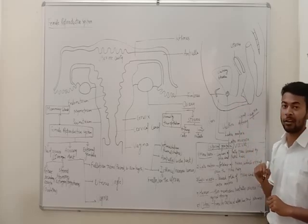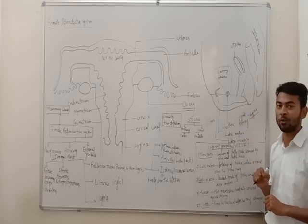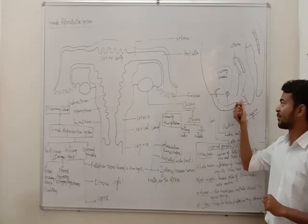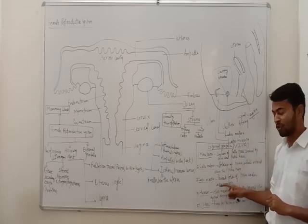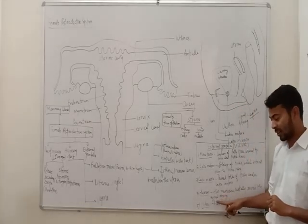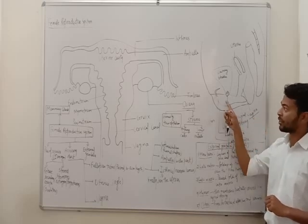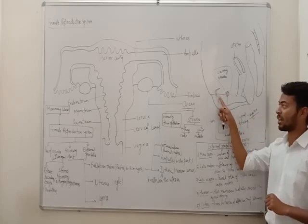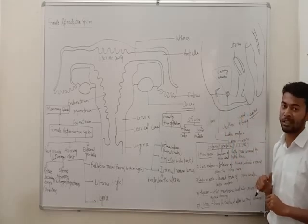The hymen is often torn during the first sexual experience, or it may also be broken due to active participation in some sports like horse riding. But it may even persist after sexual experience, so the hymen is not a reliable indicator of sexual experience. The last part is the clitoris, which is a tiny finger-like structure present at the upper junction of the two labia minora. It is a rudimentary structure in the female external genital region.